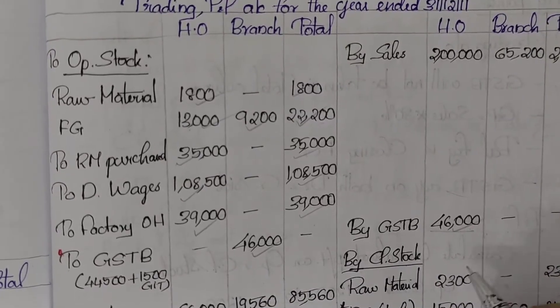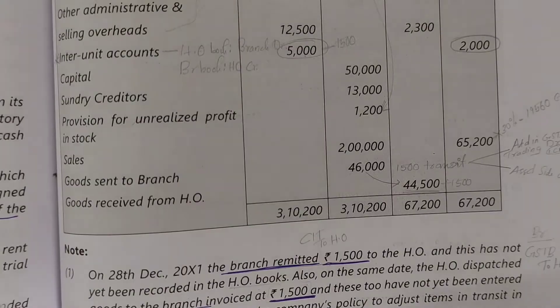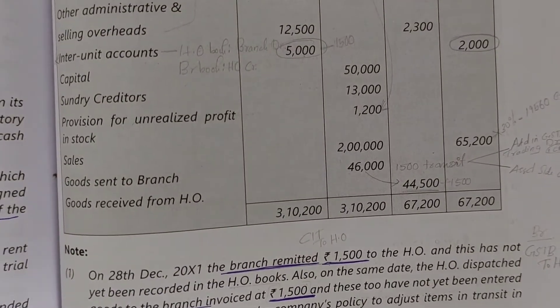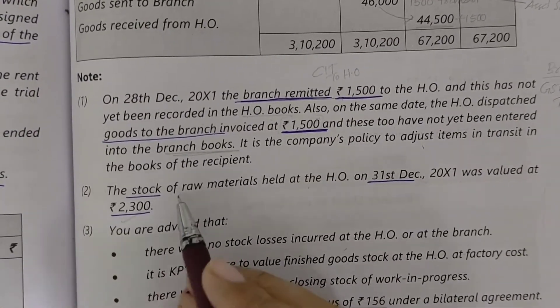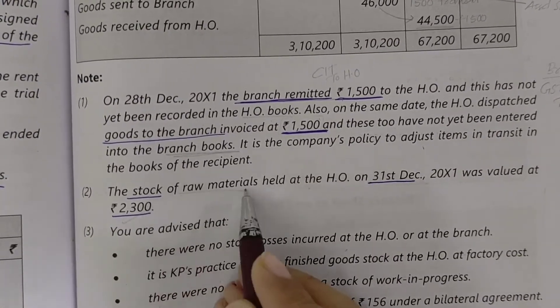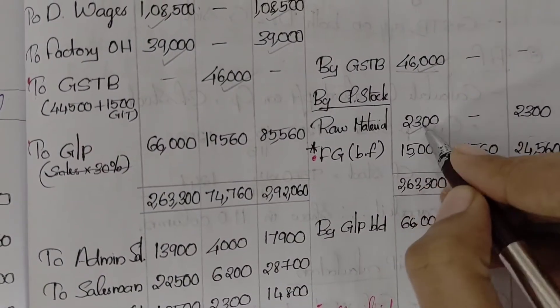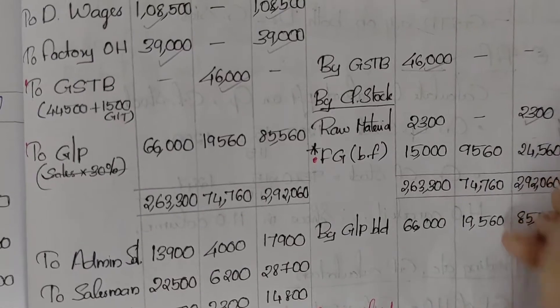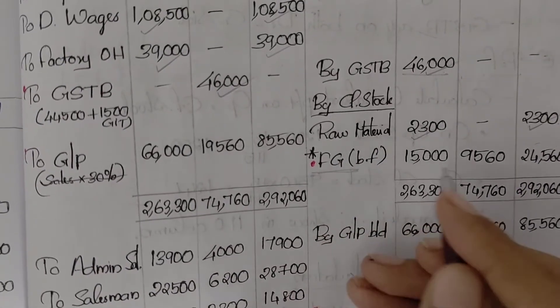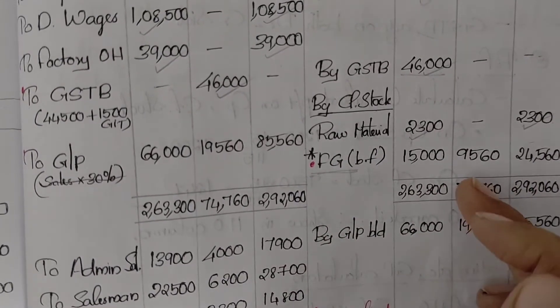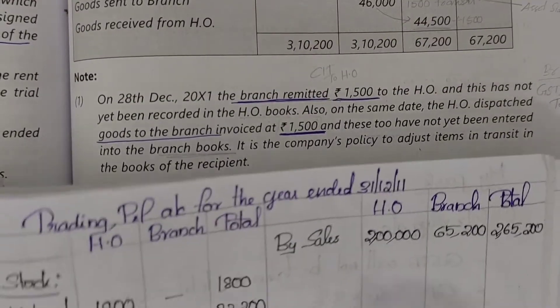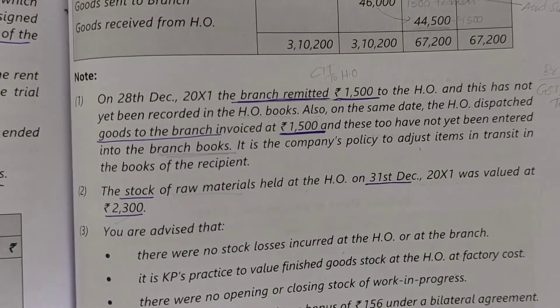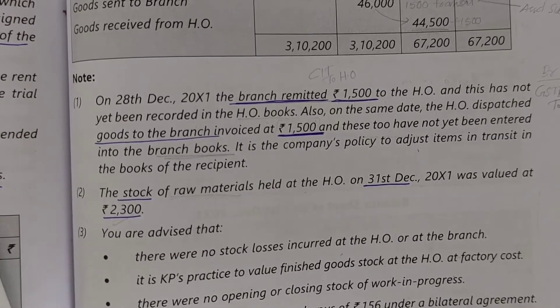Closing stock of raw materials is 2300. Then closing finished goods: head office 33000, branch 44000, total system 5000 and 2500 for each. We need to calculate the gross profit as a balancing figure; the gross profit is 30% of sales for both head office and branch.